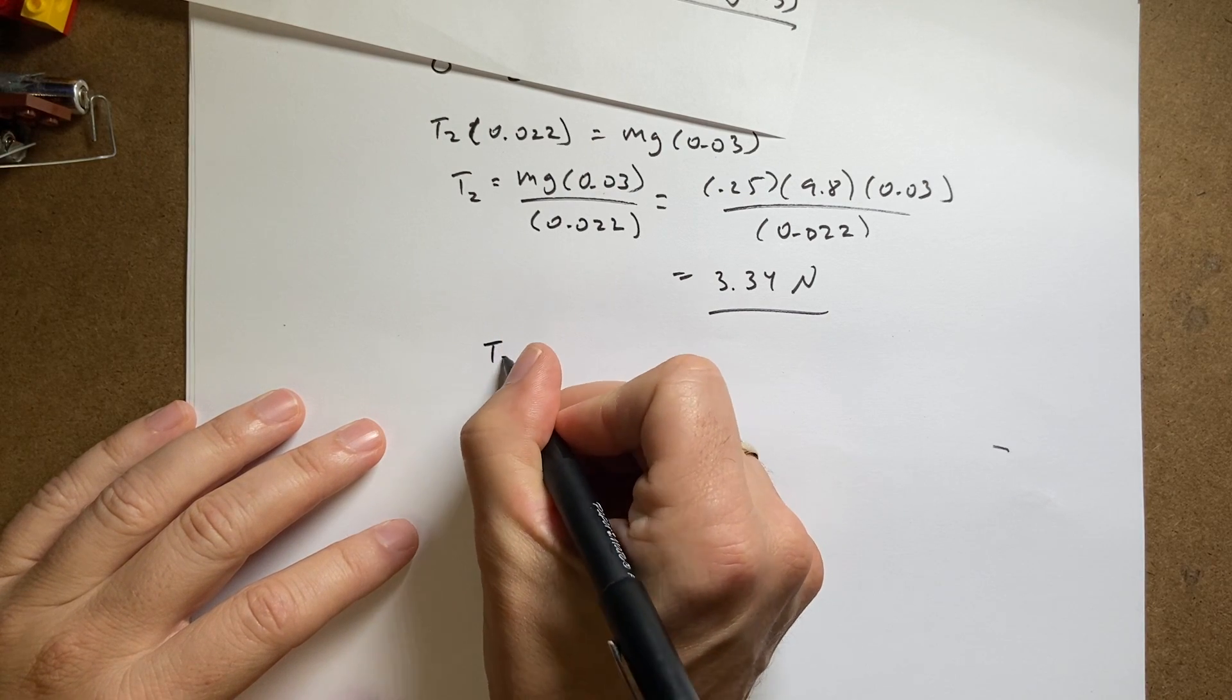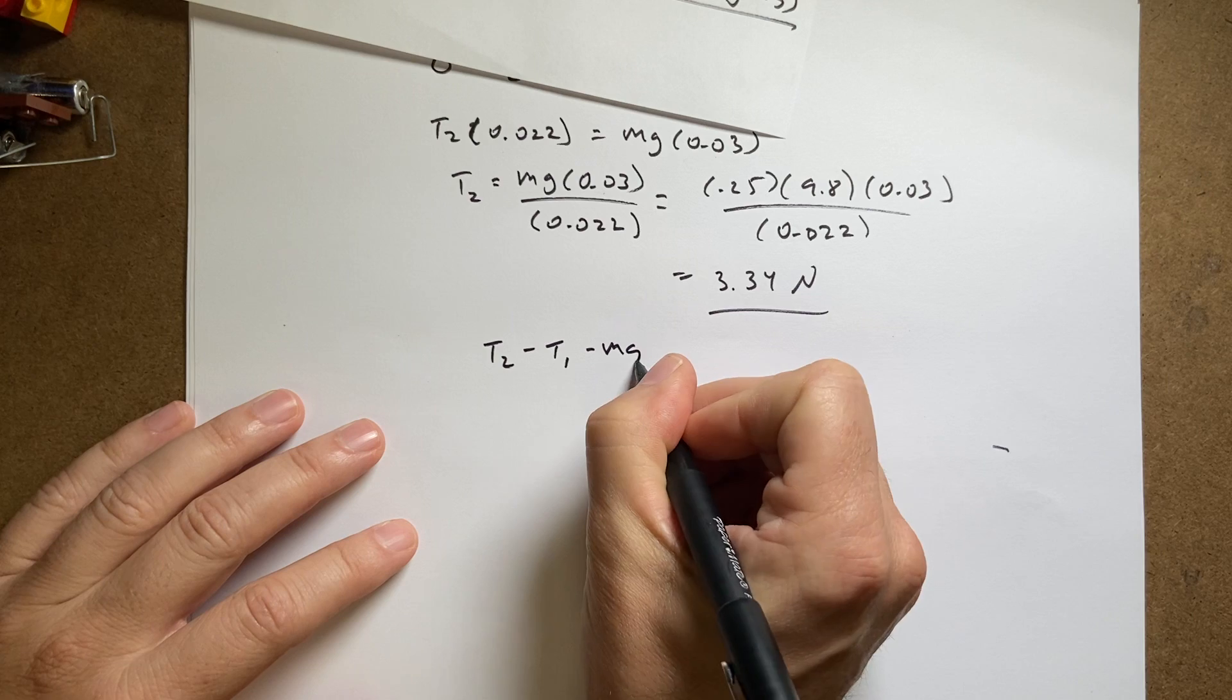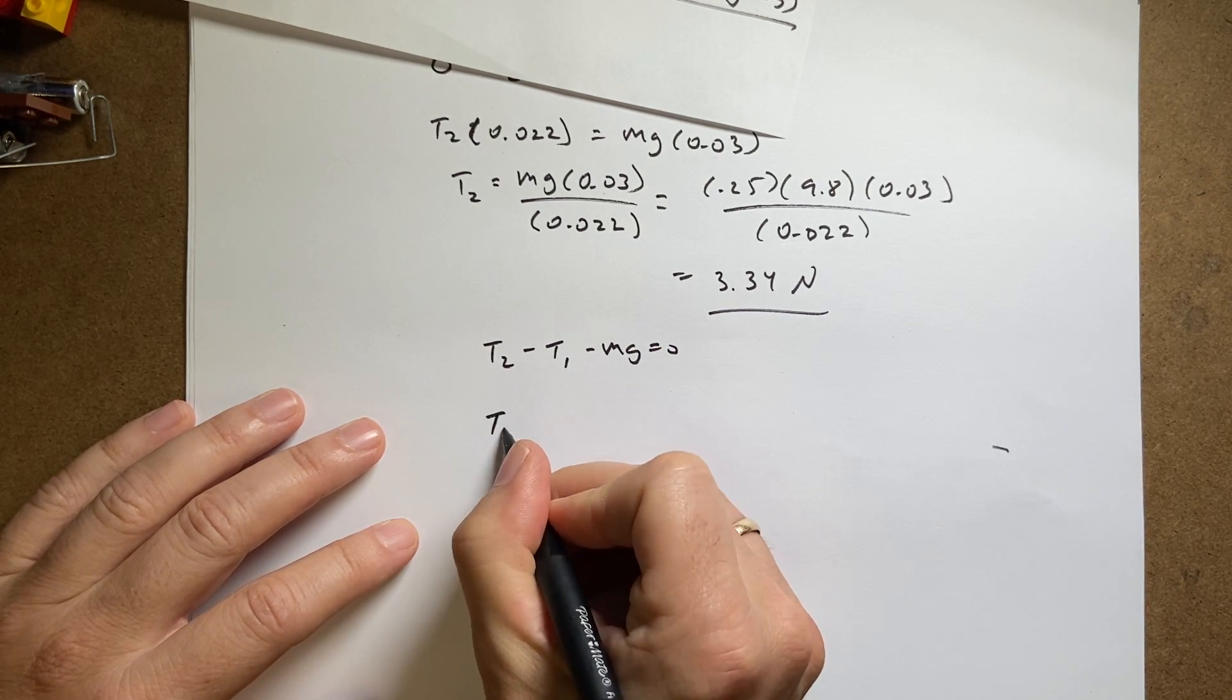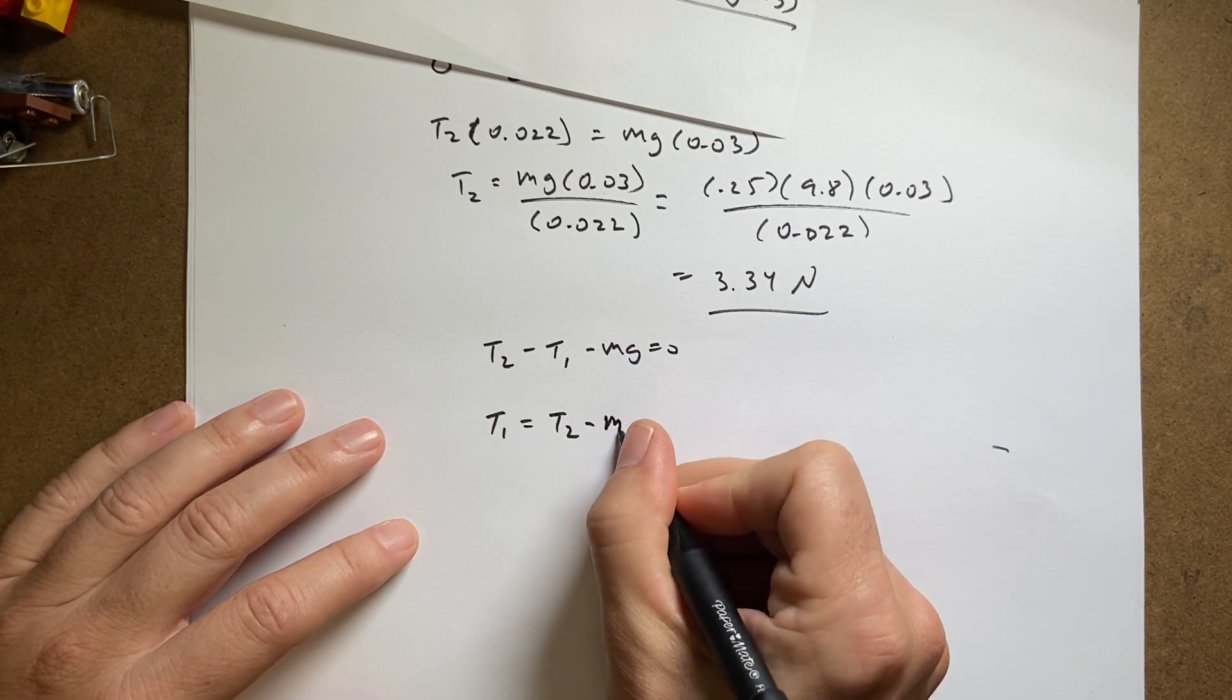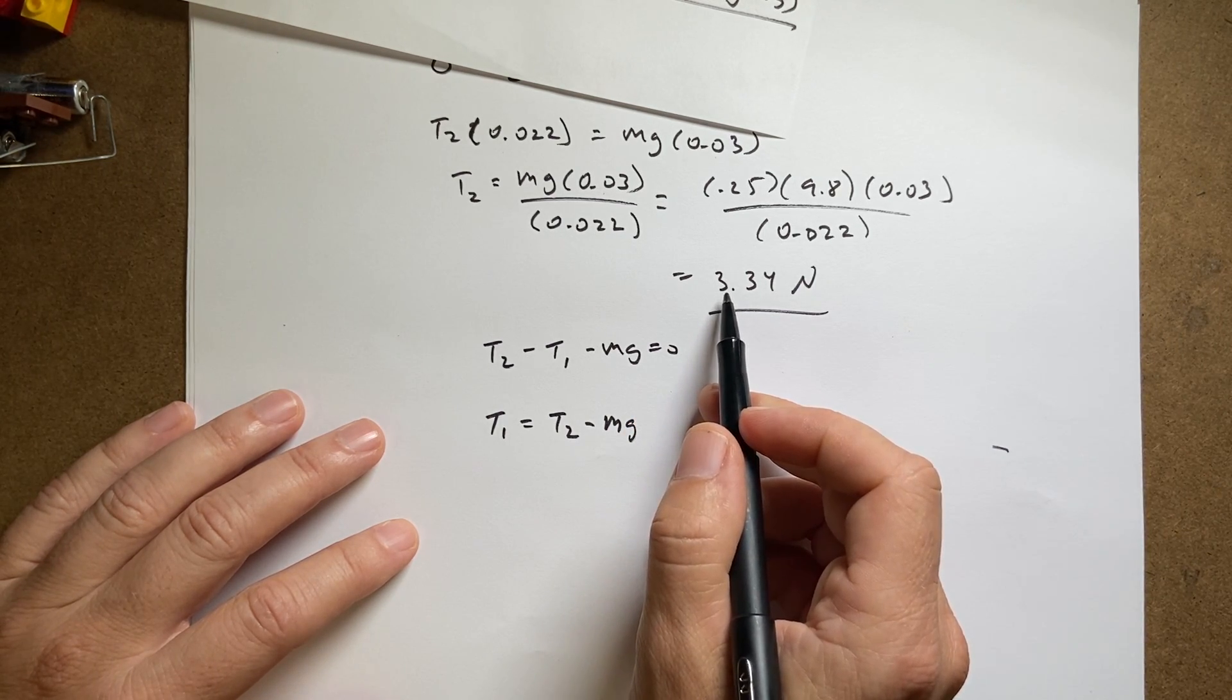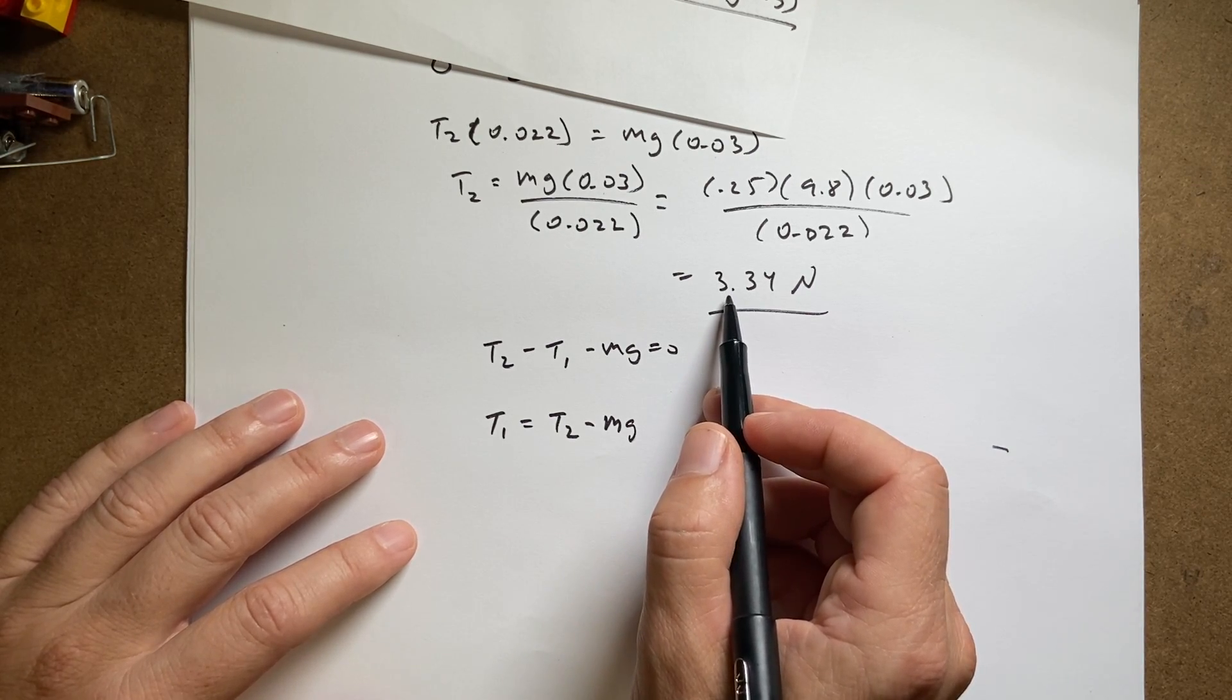So I can say T2 minus T1 minus mg equals 0. So T1, I'm going to add that to both sides. I get T1 equals T2 minus mg. That is actually, yeah, that's the magnitude of the tension. It's actually pulling up, though.